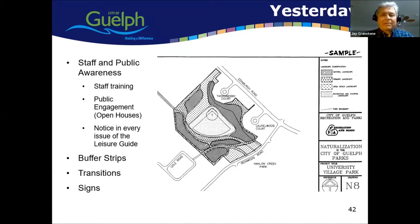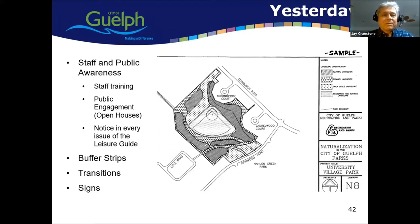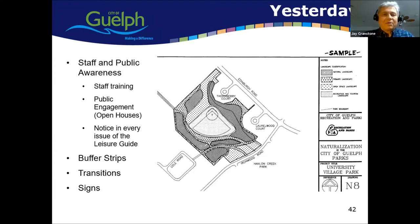There was a lot of staff education so staff could answer public questions, and significant public engagement through open houses and leisure guide notices. Key lessons included developing buffer strips between residential properties and natural landscapes — rather than running right to the fence — creating transition zones with different mow heights between short grass and tall natural areas, and using signage and communication to answer questions and communicate the goals of the program.